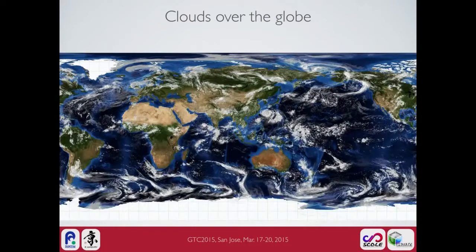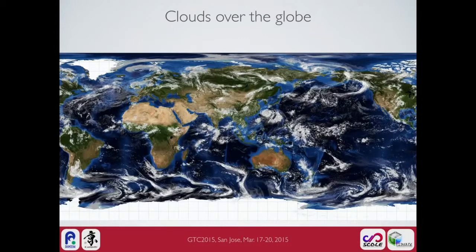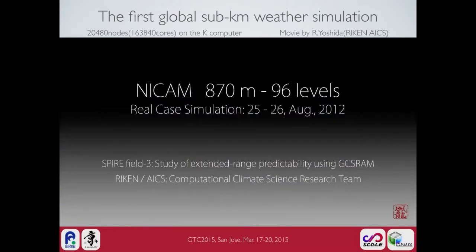This is a cloud — the cloud covers all over the globe. Several phenomena are found in each different place, and this picture is not a satellite image, this is our simulation result. We conducted the first global sub-kilometer simulation on the K computer using the NICAM model.